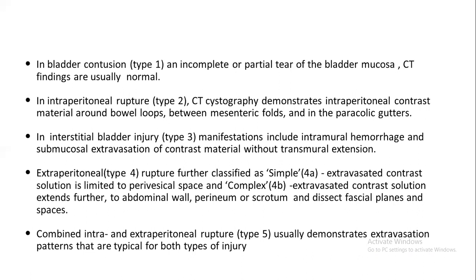Types of bladder trauma: Type 1 is bladder contusion, an incomplete or partial tear of bladder mucosa; CT findings are usually normal. Type 2 is intraperitoneal rupture; CT cystography demonstrates intraperitoneal contrast material around bowel loops, between mesenteric folds, and in the paracolic gutters. Type 3 is interstitial bladder injury, with manifestations including intramural hemorrhage and submucosal extravasation of contrast without transmural extension. Type 4 is extraperitoneal rupture, classified as simple (extravasated contrast limited to perivesicle spaces) or complex (contrast extends into abdominal wall, perineum, scrotum, dissecting fascial planes). Type 5 is combined intra- and extraperitoneal rupture, demonstrating extravasation patterns typical for both injury types.